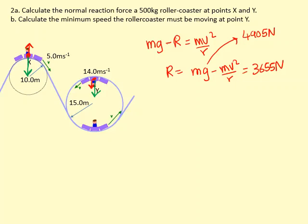So they're going to add up to make the centripetal force. So at the second point we have Mg plus R equals Mv squared over R.